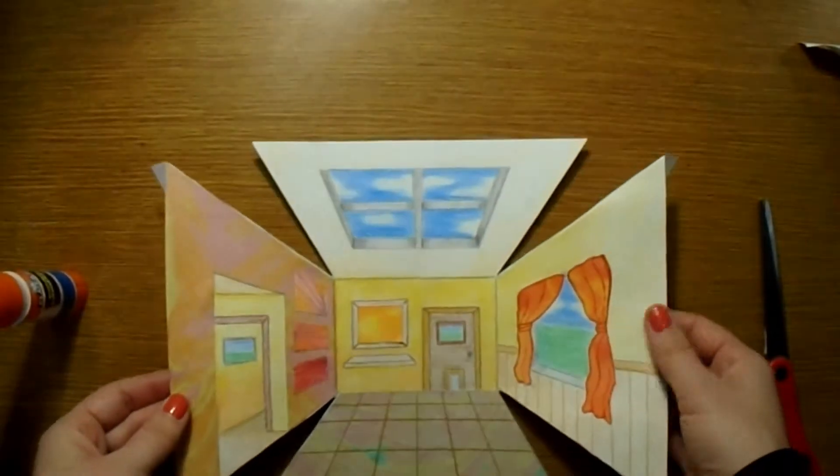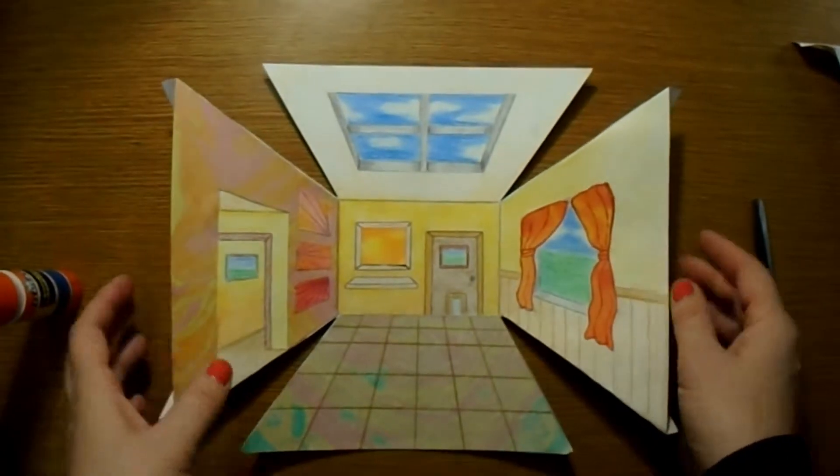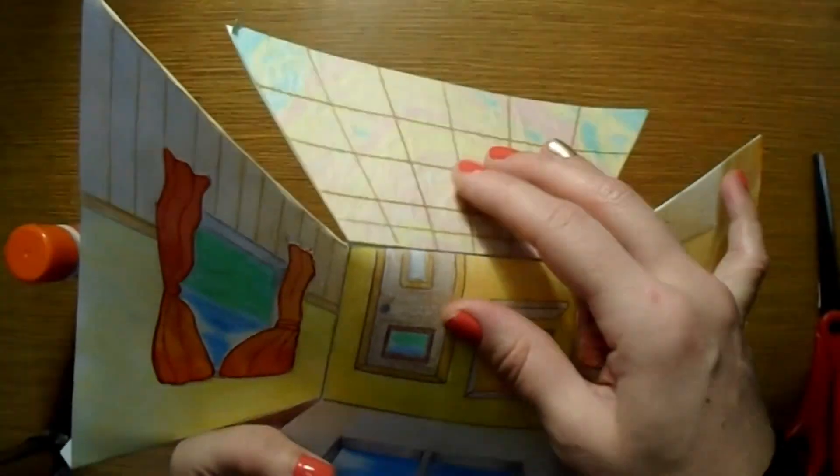So when I finish this, it's going to kind of look like a cross. So now I'm going to carefully fold each side of the back wall.